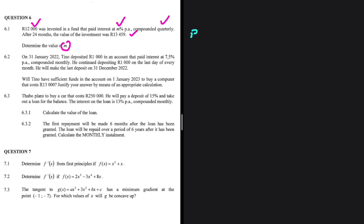Our principal amount is 12,000 and our accumulated amount is 13,459. The interest is what we're supposed to find — m percent, which is just m divided by 100. It is compounded quarterly.